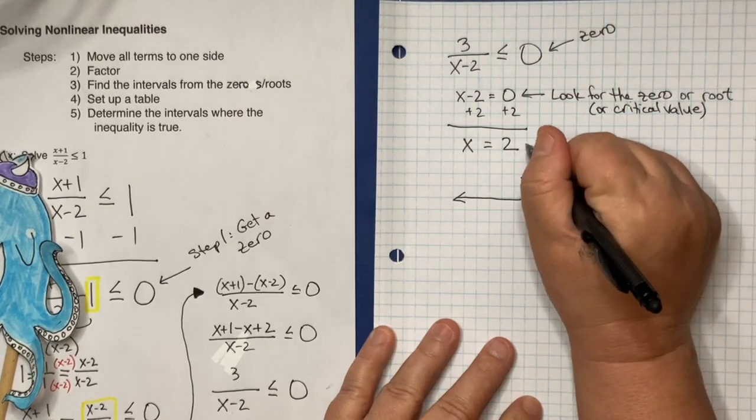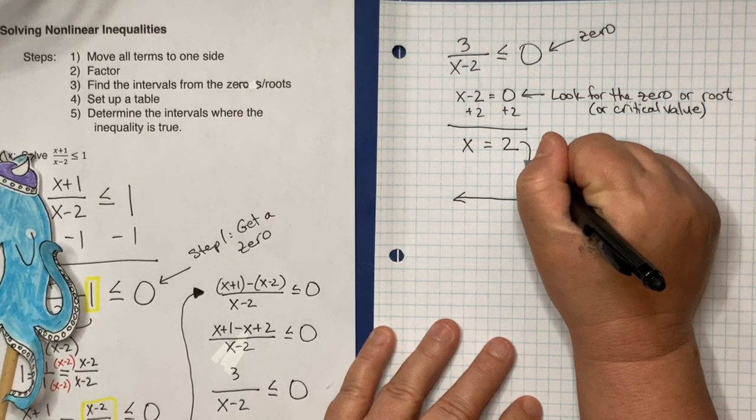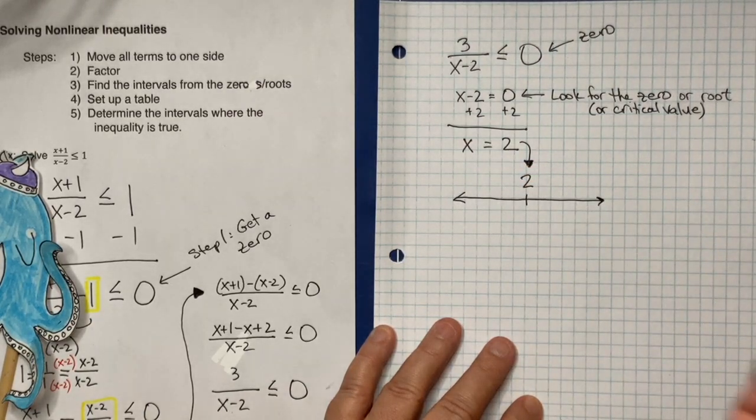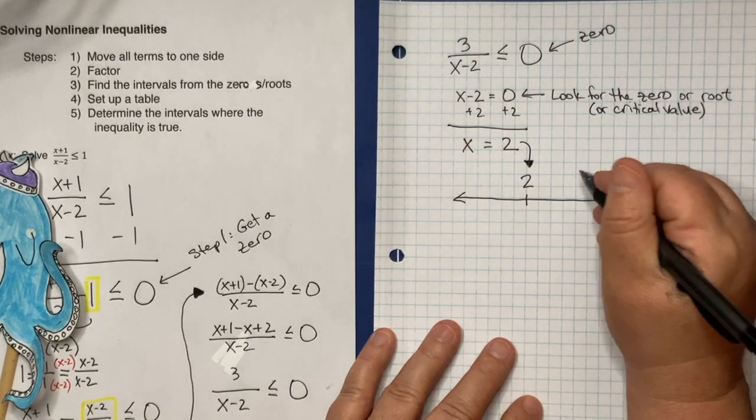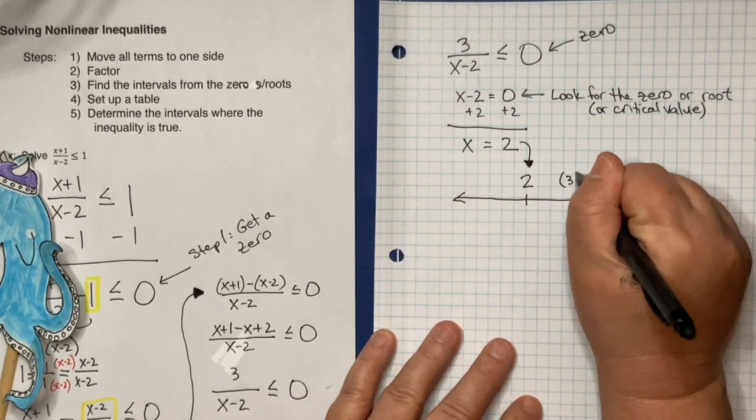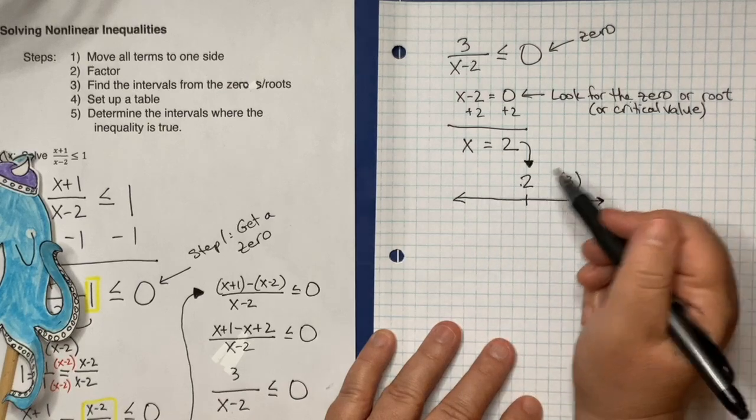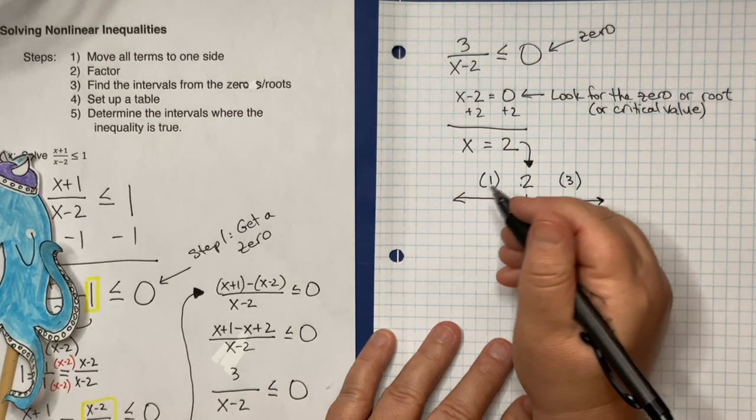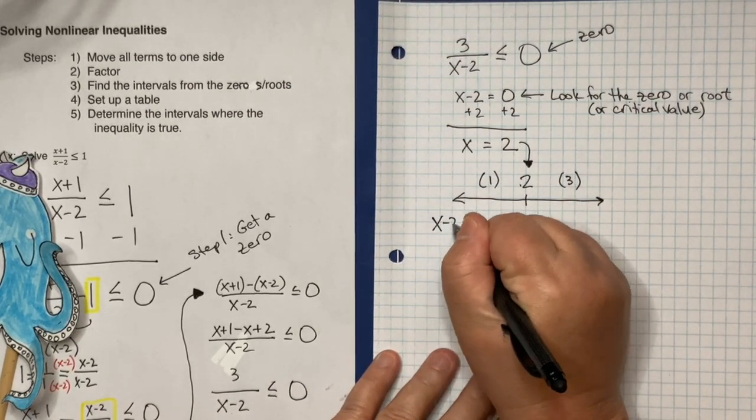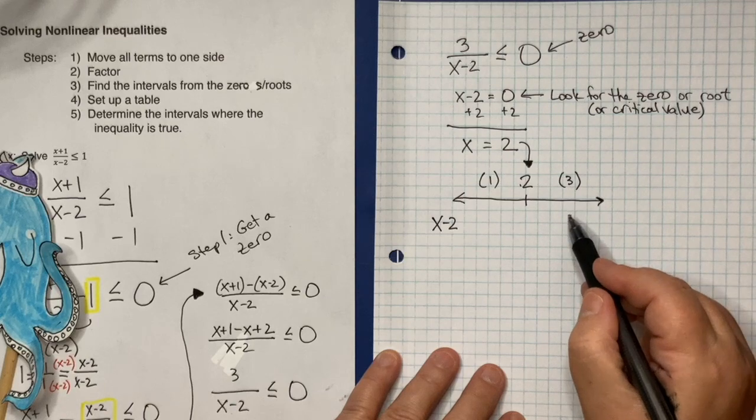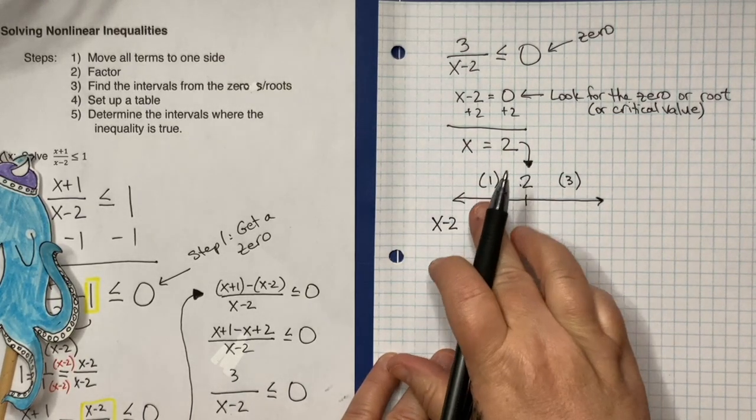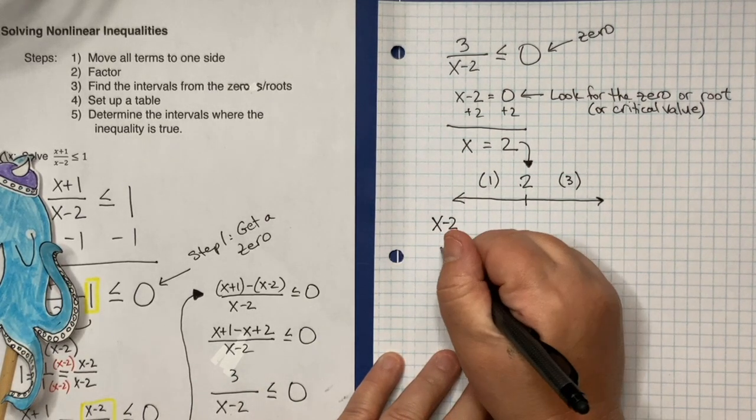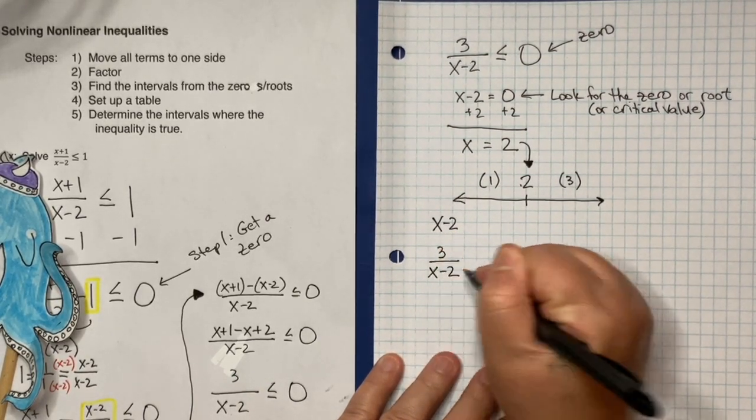And so I set up a number line. I've got 2 sitting right here, like that. And I've got numbers bigger than 2 and I've got numbers less than 2. So I'm going to pick, you can pick whatever you want. You could pick a million, or I could, I'm going to pick 3. And over here, you could pick negative 12 or 0. I'll go ahead and pick 1. And so then I want to take a look at what happens to x minus 2 in these three sections. See how I've broken it down into this section, this section, and that section?